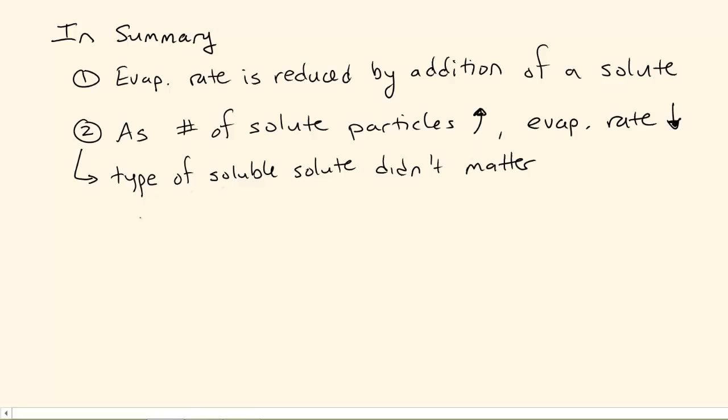And that's why this is called a colligative property. A colligative property is one that only cares about how many particles, not the type.